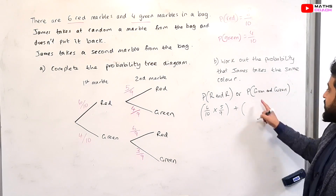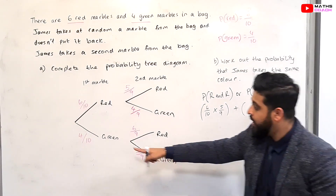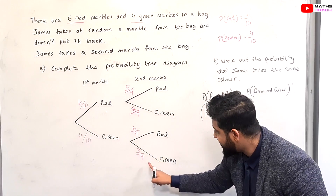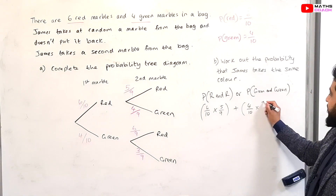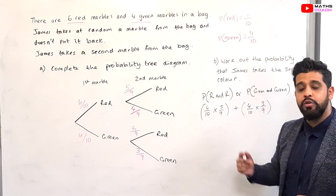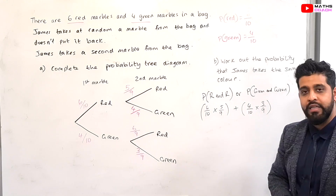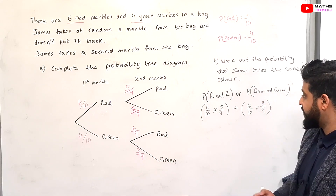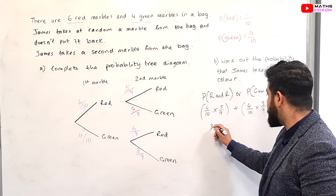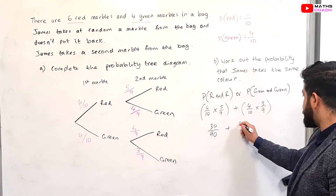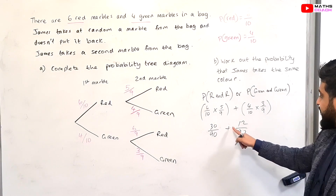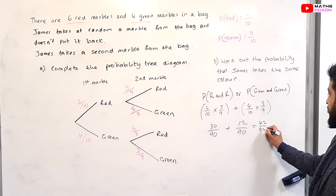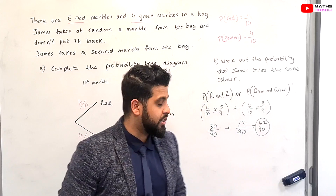So we add the probability of a green and a green: 4/10 × 3/9. If it's a calculator paper you can use your calculator, but for a non-calculator paper you work out the multiplication of fractions. So 6 × 5 = 30 over 90, and 4 × 3 = 12 over 90. We have 30/90 + 12/90. The denominators are the same so we add the numerators: that's 42 over 90. You can leave the answer like that or simplify if you want to.